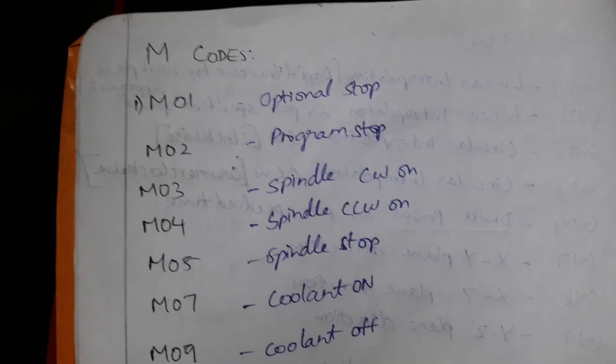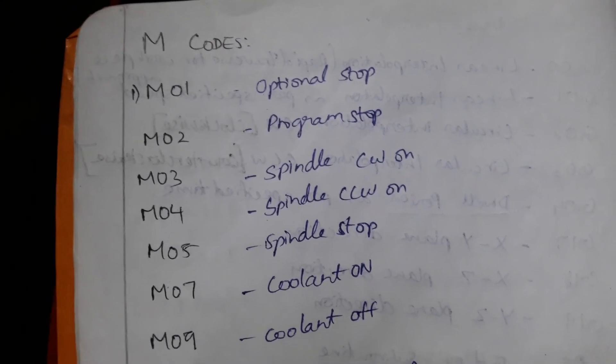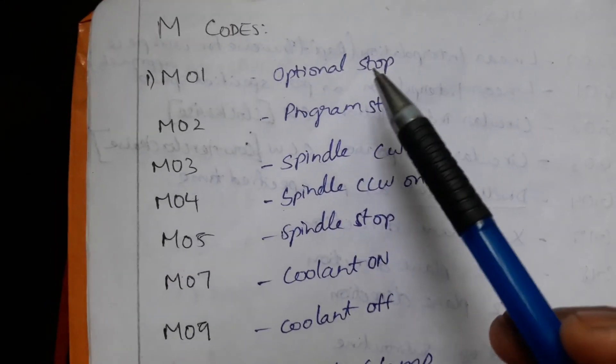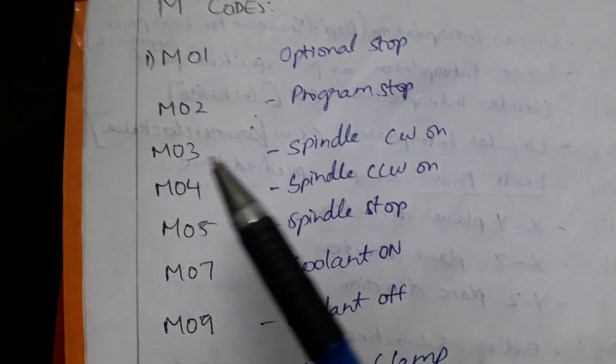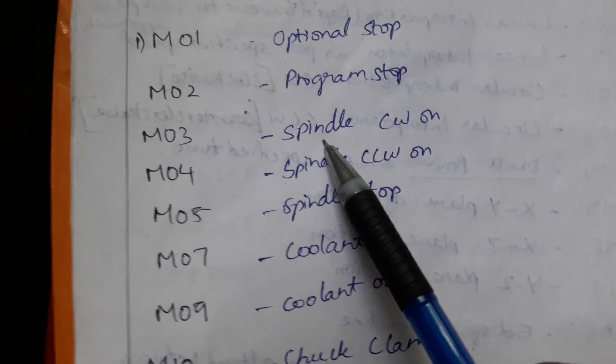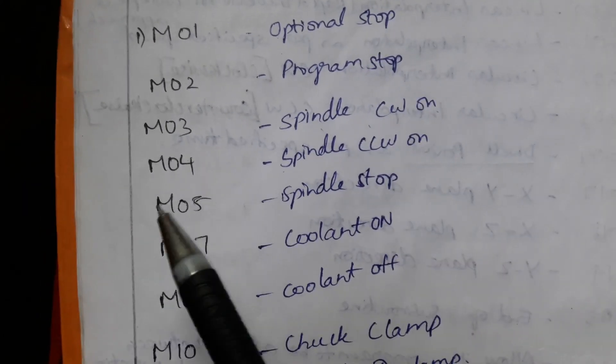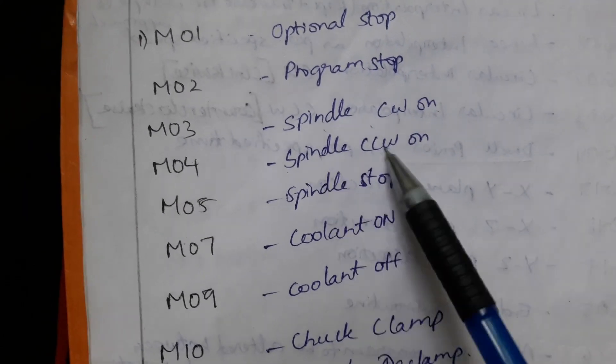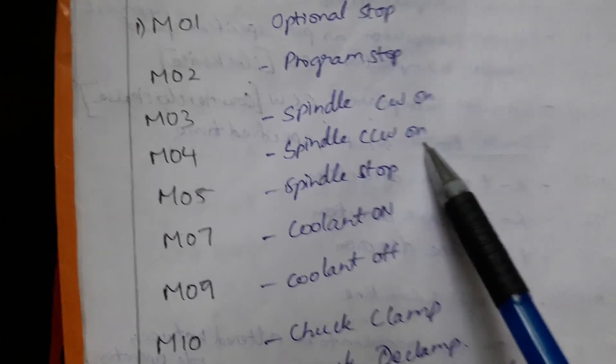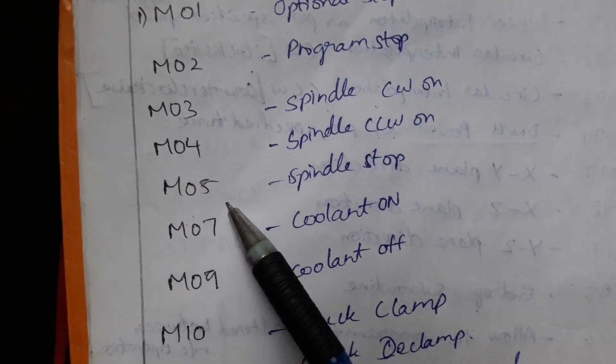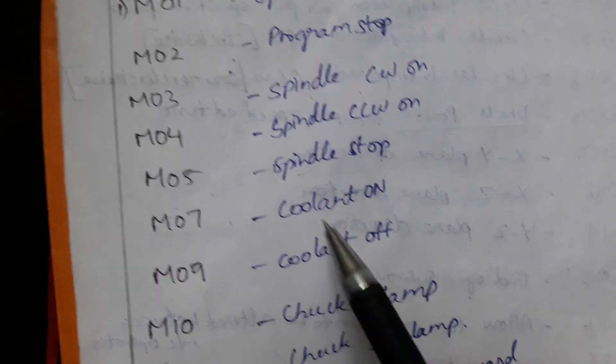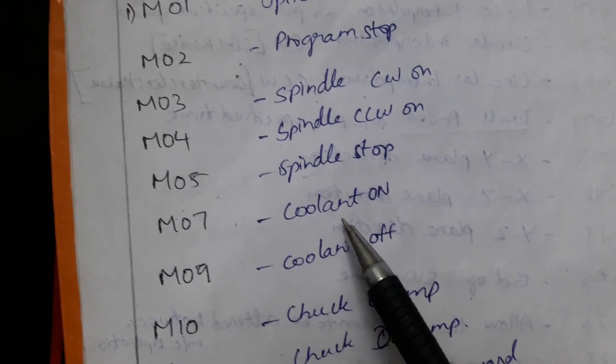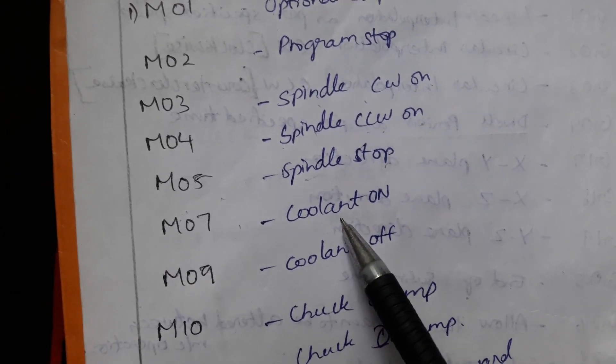Then M codes. M01 stands for optional stop. M02, program stop. M03, spindle clockwise on. M04, spindle counterclockwise or anti-clockwise on. M05, spindle stop.